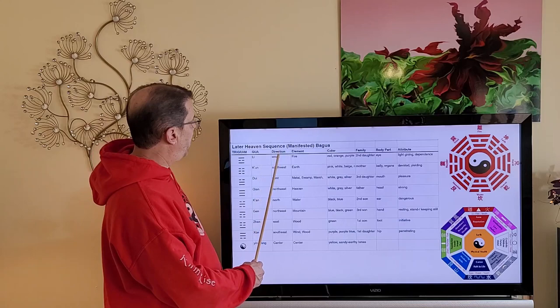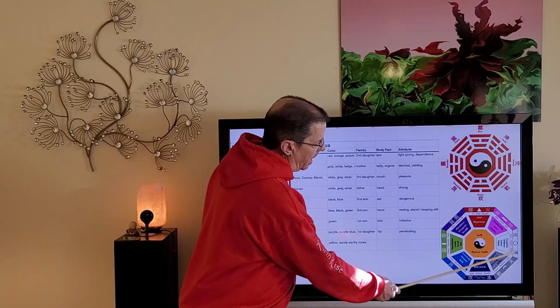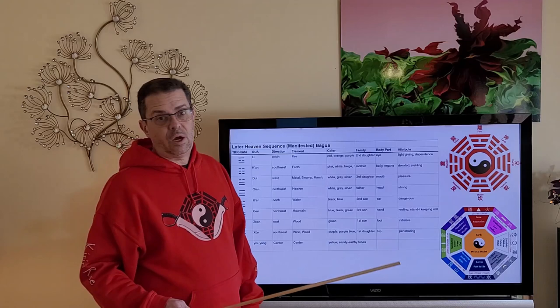Here are more attributes of the Later Heaven Sequence including things like direction, element, and color. Color might be placed on a Bagua and used in Geomancy like Feng Shui to divine a space, a home, or an office, or something like that.